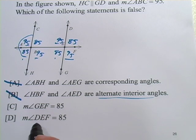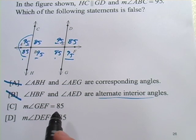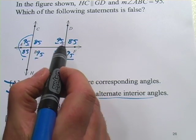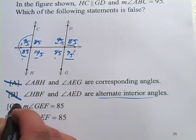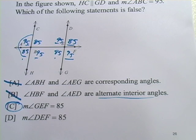This one says the measure of DEF is 85. DEF, that's this one right here. Yep, that checks out. So it looks like C is the false answer. So that is a short introduction to transversals.